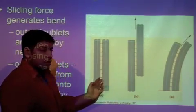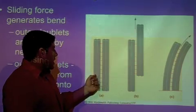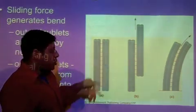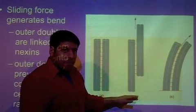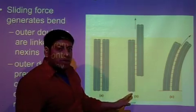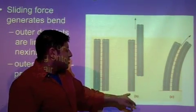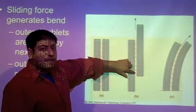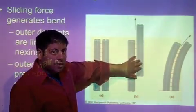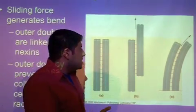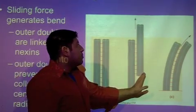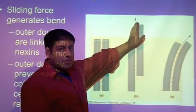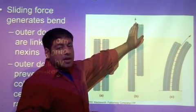Here we have a pair of doublets — an A and a B subunit, and another A and B — with dynein arms in between. In part B, if you remove the nexin, one of these microtubules remains where it is while dynein generates force on the second one to the right. Without nexin, that set of microtubules gets pushed upward and keeps going because there's nothing to restrict how far it can travel.